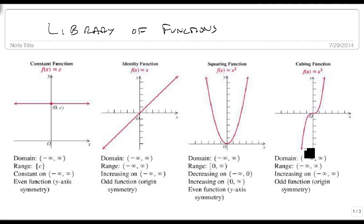The cubing function has a minus infinity to infinity domain because it goes all the way to the left and right. It goes all the way up and down, minus infinity to infinity on the range. It's always increasing, and it's an odd function. So these are the first four that you need to be able to look at and recognize.